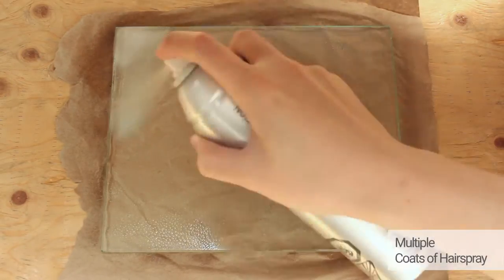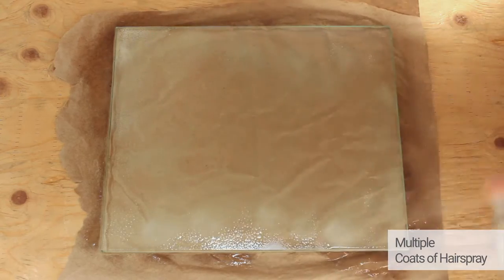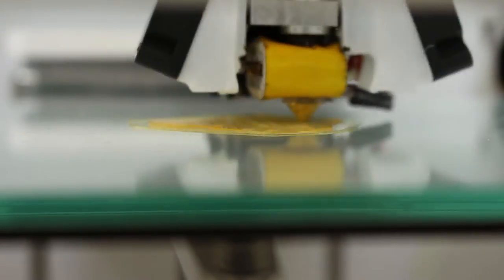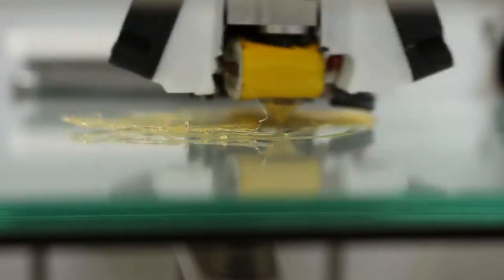Now let's spray multiple coats on the glass bed. You would literally like to drench the glass bed with hairspray like this. It's sticking on the first layer, but it came off just like the first one.